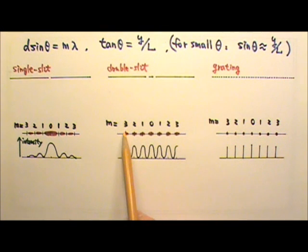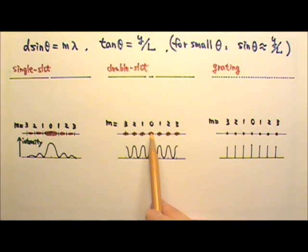For the double slit, the patterns on the screen are about the same size bright fringes, and they have just about the same intensity.